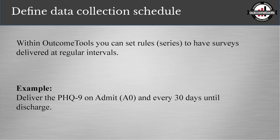Once you choose your tool, you need to define your data collection schedule. In the case with Heather and Kristen, we are going to deliver the PHQ-9 on admission and every 30 days until discharge. Within Outcome Tools, we can set those rules and set a series that will calculate off of the admit date or the discharge date, taking the guesswork out for your clinicians about when the next survey is due. It will automatically create the survey and put it in the client record, and depending on the delivery method chosen, will automatically send it out.